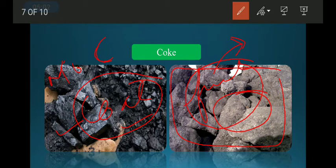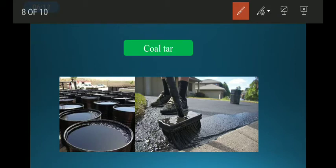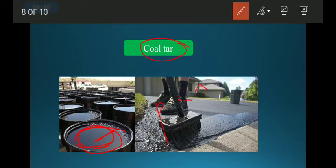Coal tar - you might have seen in road construction they use a black oil-like liquid. That is actually coal tar which we get from coal. Apart from this, it is used for other purposes like photographic material, paint, and plastic manufacturing.